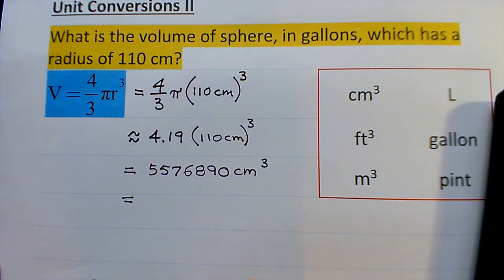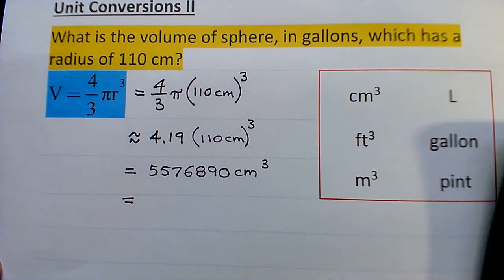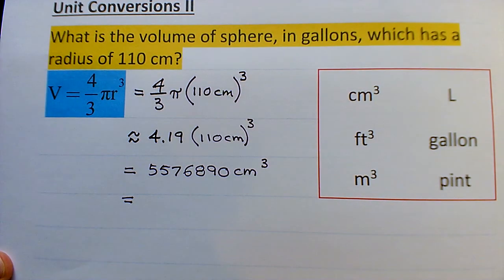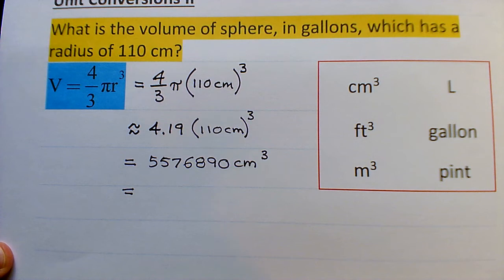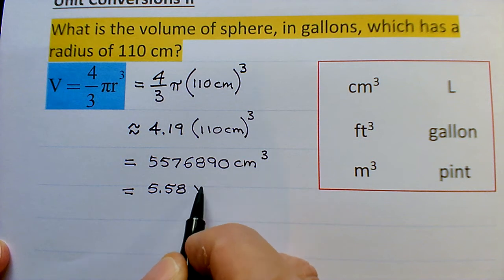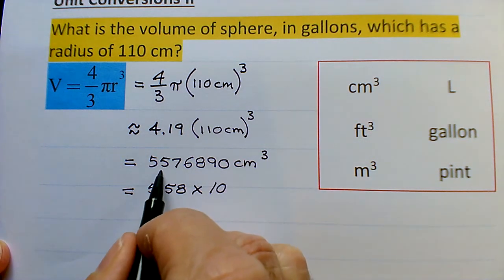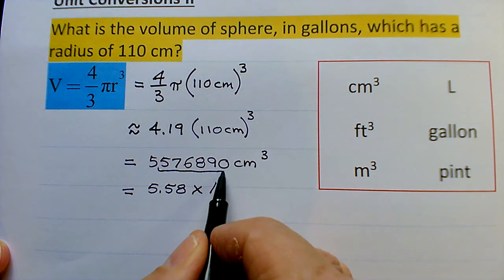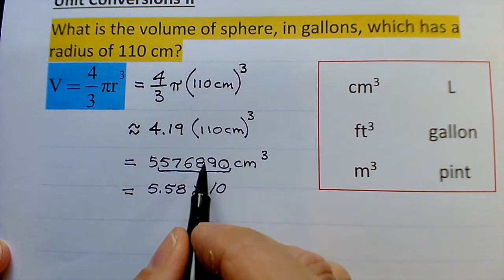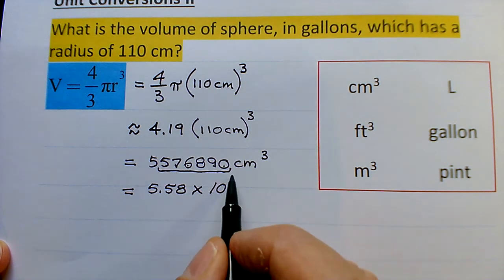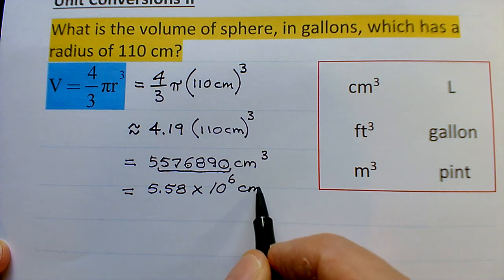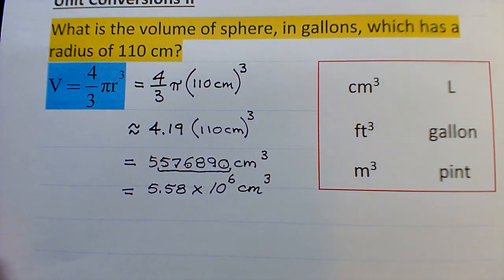Now, I'm not a big fan of significant digits, and I'm probably going to get a lot of flack for that since I am a science teacher. But we're going to round this to 5.58 and rewrite it in scientific notation. I had to move my understood decimal to the left one, two, three, four, five, six places. And so that gives me 5.58 × 10^6 cubic centimeters.